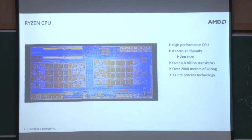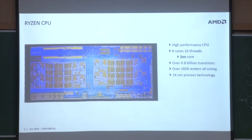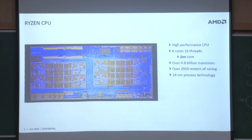This is a die shot of the Ryzen CPU. It has two clusters called CPU complexes, and each complex has four cores called Zen cores. Our chief architect chose the name Zen because he wanted a balanced design. So there are eight cores in one die, along with L2 caches and L3 caches.